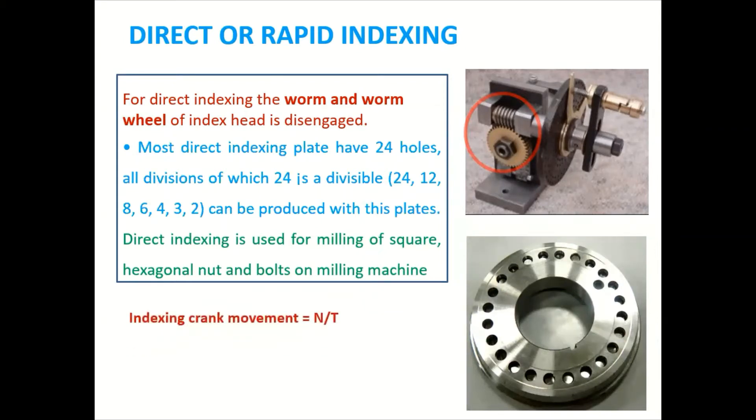So for that we require one formula which is called as index crank movement ICM is equal to N by T. N is nothing but the number of holes in the index plate and T is nothing but the number of required divisions.